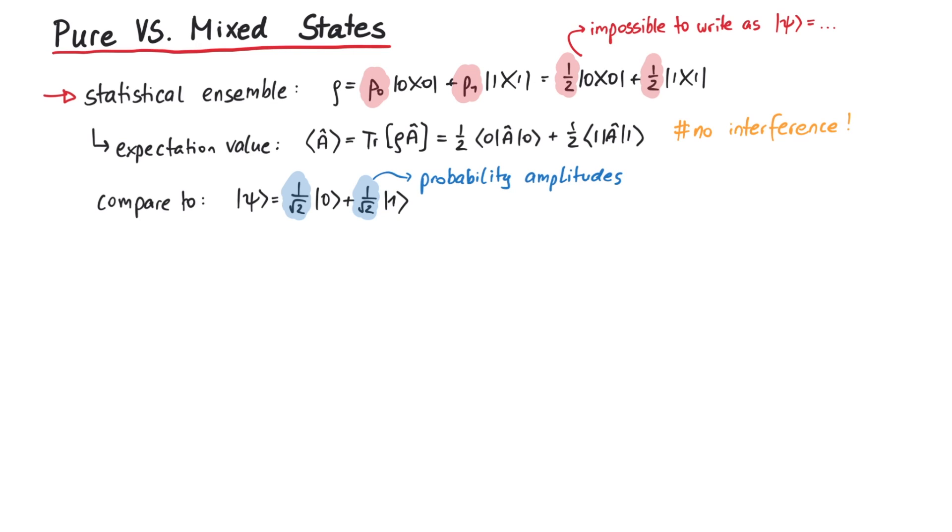Therefore, it's not correct to say that we have 50% of our system in the state 0 and 50% of our system in the state 1 if we are using a ket state. There are actually two more ways to distinguish a pure state from a mixed state.